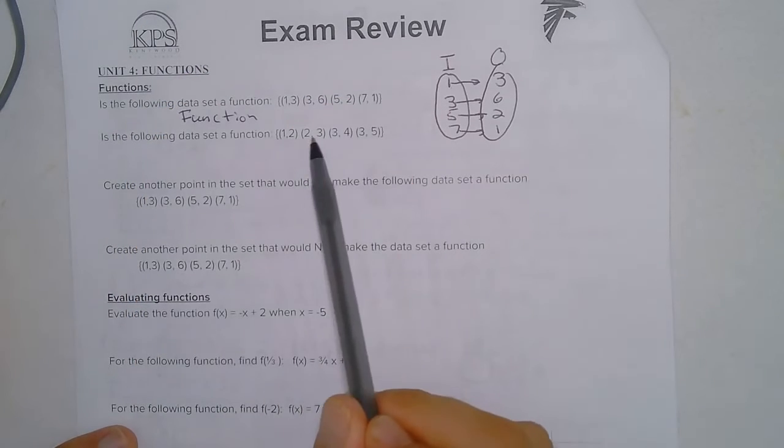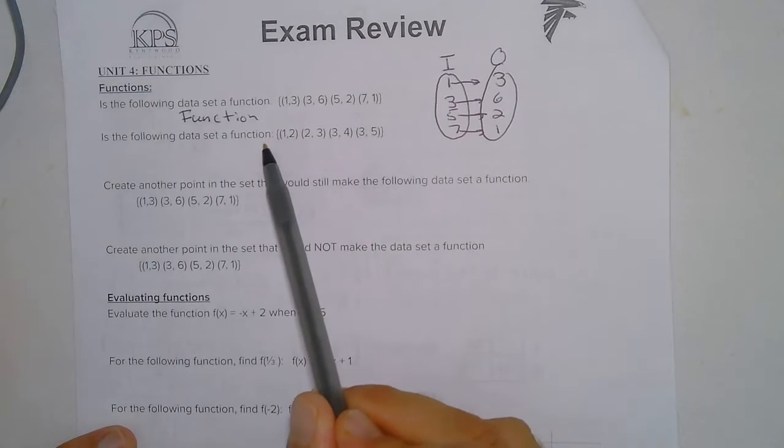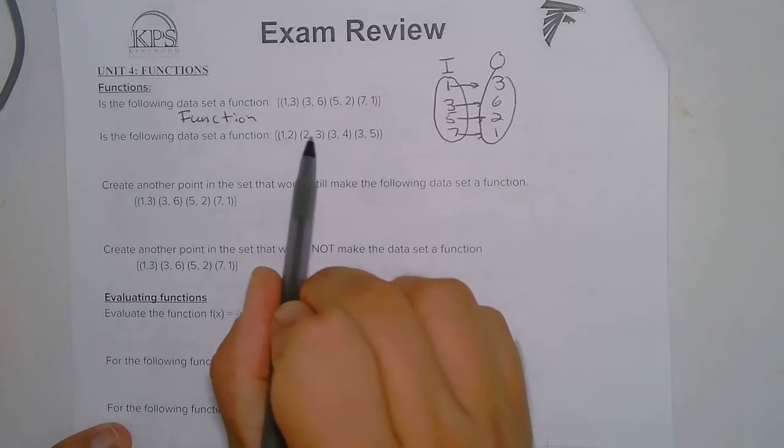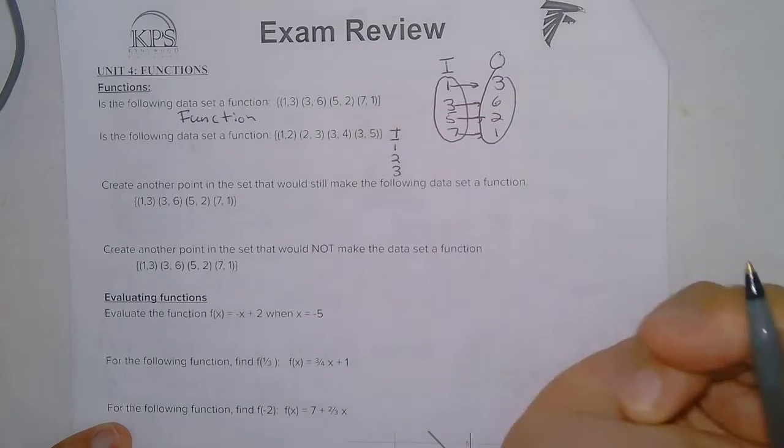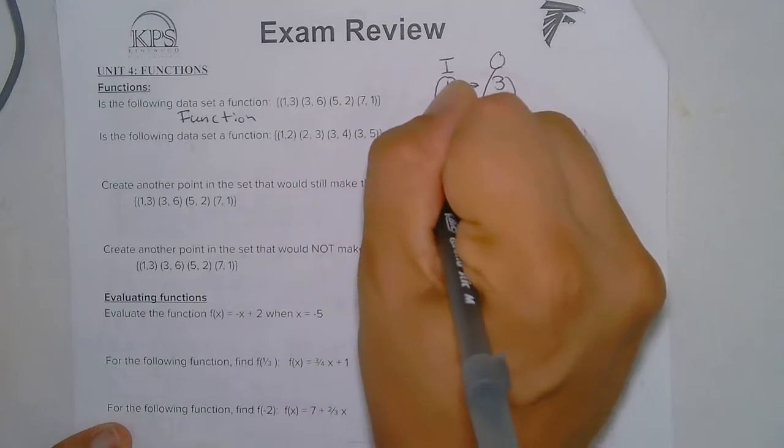So for this set I'm going to draw another mapping. So our inputs 1, 2, 3, and 3. So I'm just going to write 1, 2, and 3. And then our outputs.